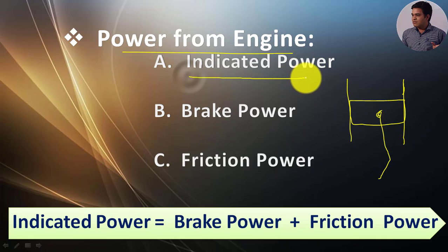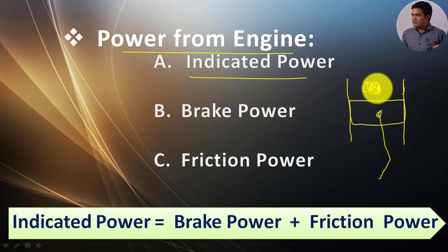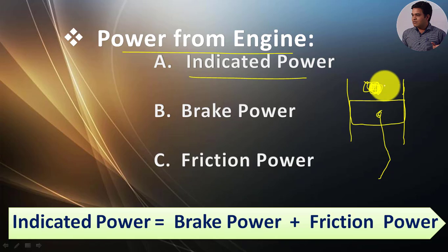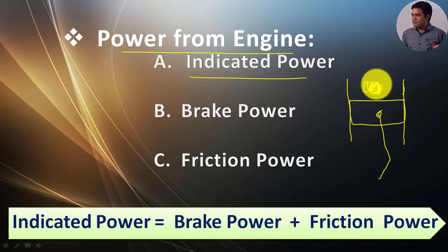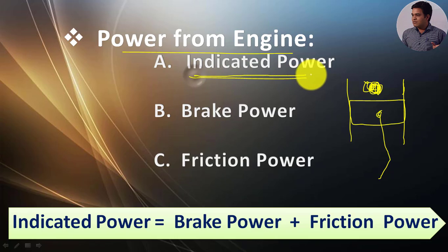The first is indicated power. When the charge — for a petrol engine, charge is fuel plus air, and for a diesel engine, charge is only air — gets compressed at the end of the compression stroke and ignition starts, combustion of the charge takes place and power is liberated. That power which is produced due to the pressurized hot flue gases inside the cylinder at the top of the piston is called the indicated power.